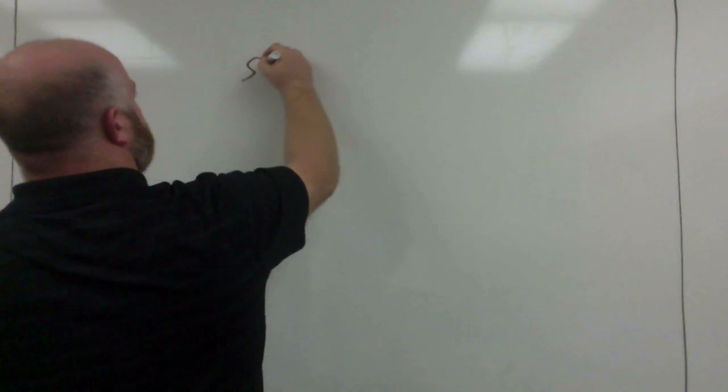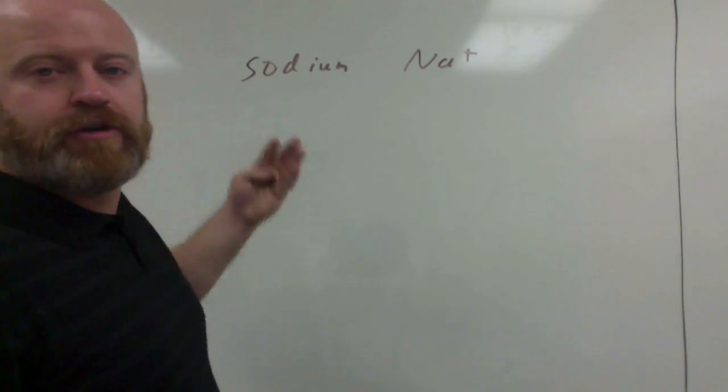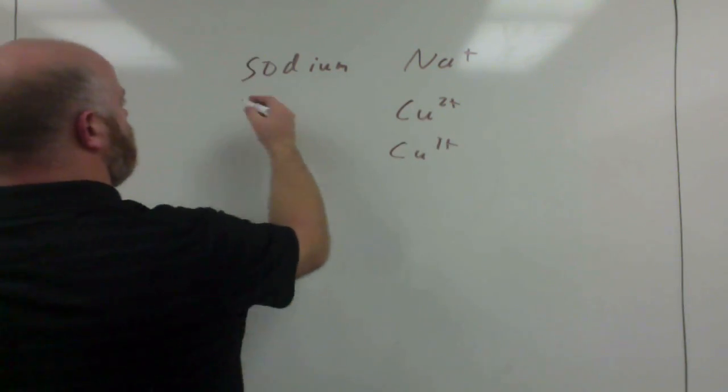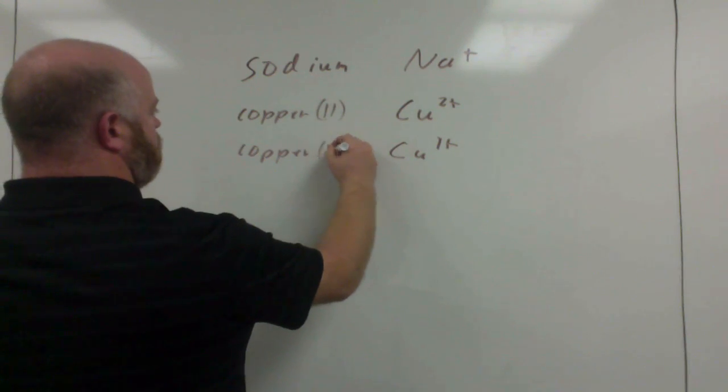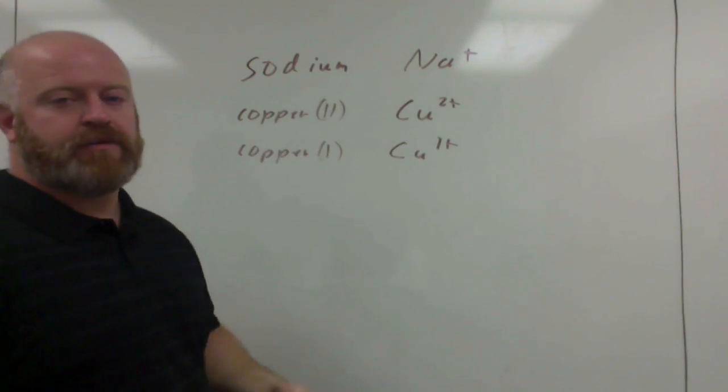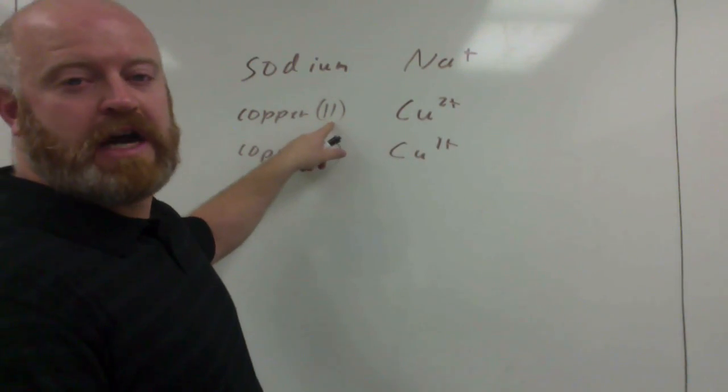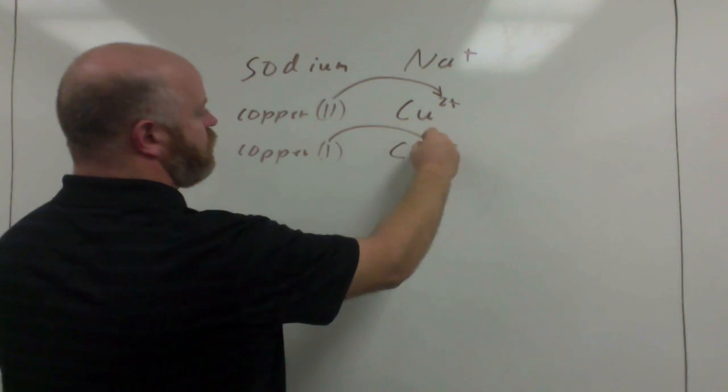When copper forms a 2-plus, we will follow that with a Roman numeral 2 in the word format or the name format. And when copper is a 1-plus, we follow that with a 1. For example, when we're working with sodium, sodium always is Na+, so we just call it sodium. But because copper is a 2-plus or 1-plus, we call it copper-2 or copper-1. Notice how sodium doesn't have the Roman numeral behind it, but these two do because they have more than one possibility. Sodium only has one possibility, so we don't use a Roman numeral behind it.